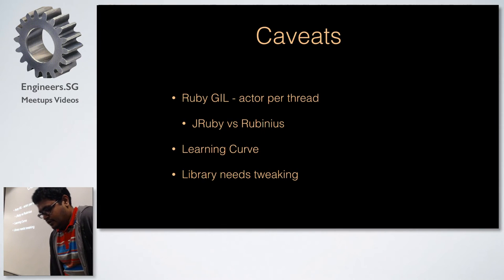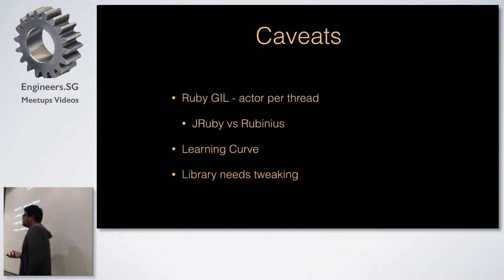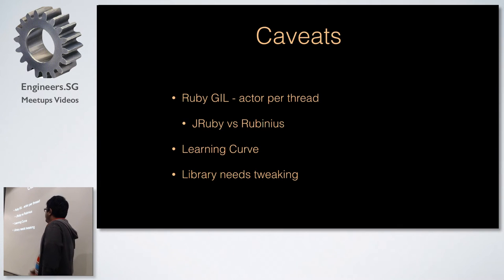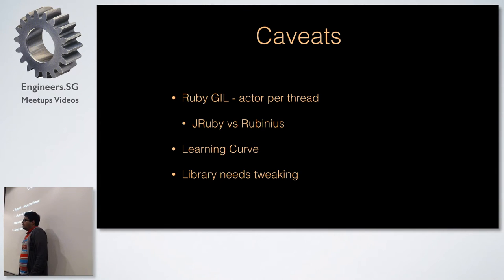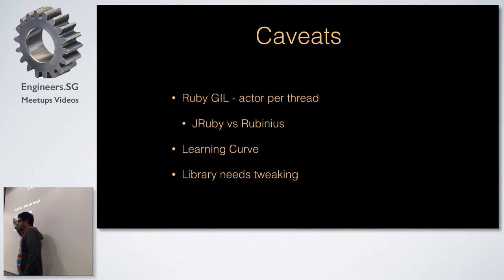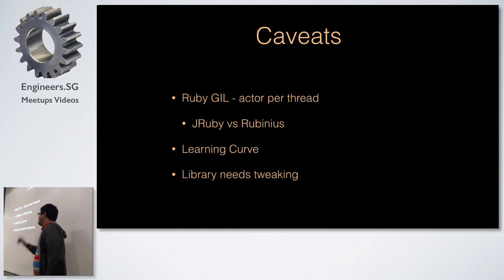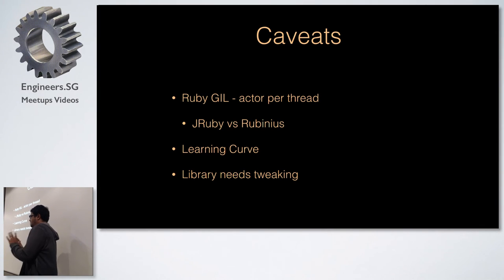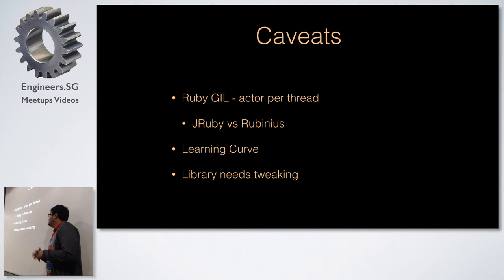Caveats: Ruby has the GIL, so even with multiple threads and actors, it doesn't scale as well as Erlang. We tried JRuby — Rubinius was a horrible experience, JRuby was better but didn't show a big difference. The problem is JRuby lacks fiber support, which they're trying to implement. There's also a learning curve, and the library wasn't fully mature — we did a lot of testing and spikes to understand it better.